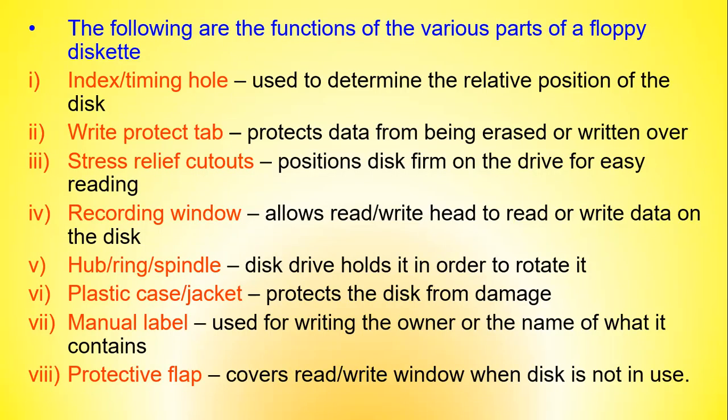The functions of the various parts of a floppy disk included: the index timing hole determined the relative position of the disk; the write-protect tab protected data from being erased or overwritten; stress relief cutouts positioned the disk firmly on the drive for easy reading; the recording window allowed the read-write head to read or write data; the hub or spindle held the disk and rotated it; the plastic case or jacket protected the disk from damage; the label was used for writing the owner's name or contents for identification; and the protective flap covered the recording window when the disk was not in use.